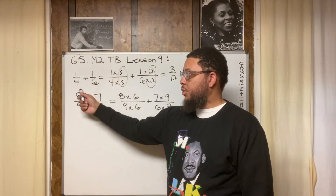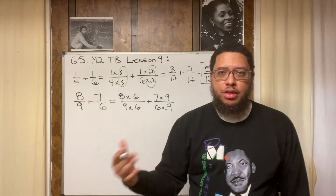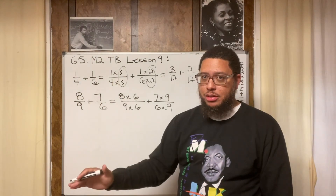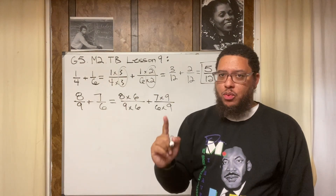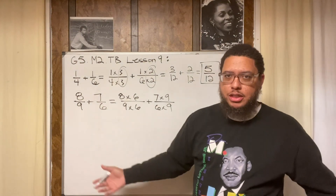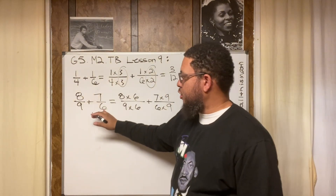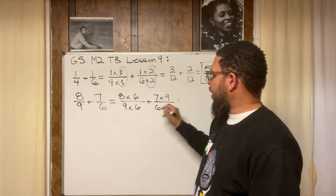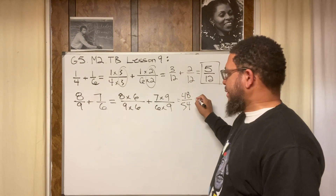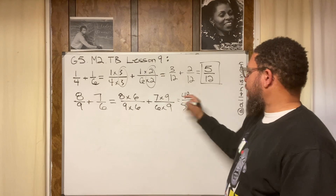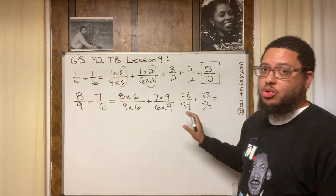We didn't have to do that in the first example and we don't have to do it here either, but I'm showing you another method. In math, there are a lot of options — there is never going to be just one way to do a problem. Familiarize yourself with as many ways as possible. Multiplying nine by six and six by nine gives us 54 as the common denominator. Make sure you have your multiplication facts memorized. Seven times nine is 63, six times nine is 54.